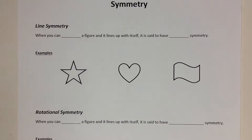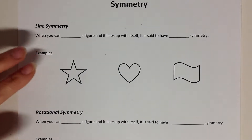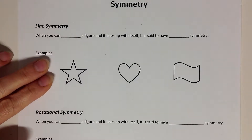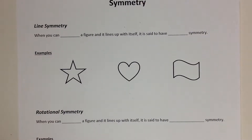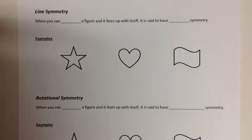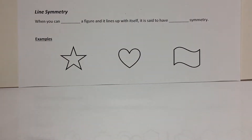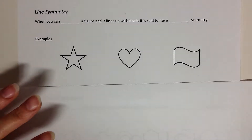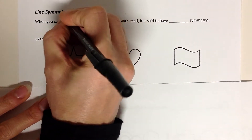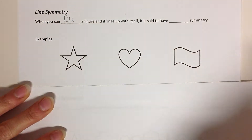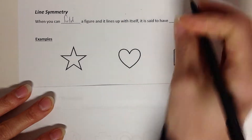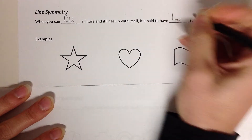When you talk about something having symmetry, there are really two things you could be talking about when you say symmetric with respect to. The first one is with respect to a line — line symmetry. Line symmetry is when you can fold a figure and it lines up with itself. That's said to have line symmetry.